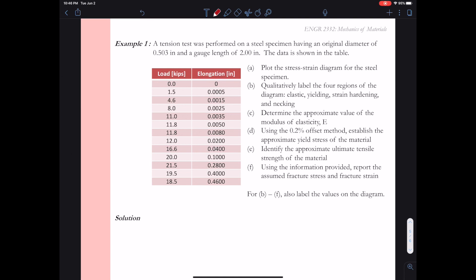So let's get started on our example. We have a tension test that was performed on a steel specimen having an original diameter of 0.503 inches and a gauge length of 2 inches. The data is shown in this table. Remember when we run a tension test we get load versus elongation data.